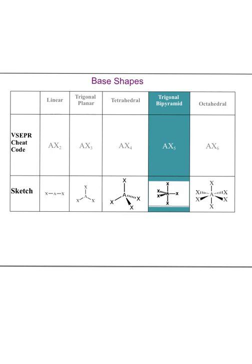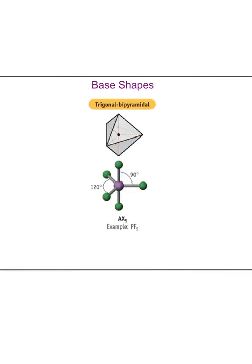Next we have trigonal bipyramidal, AX5 — a central atom with five bonded atoms. It gets this name because the atoms around the waist make a triangle, and you can build a pyramid going up and another going down — two pyramids stacked on top of each other. 'Bi' is a prefix meaning two.